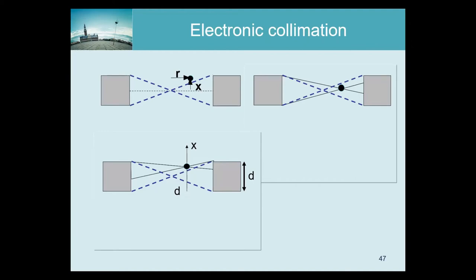Here is the same for a PET camera, but that is a bit more complicated. Suppose that these are two detectors of a PET camera — in real life they would be three-dimensional. We have an x-dimension going up, another dimension, and a y-dimension orthogonal to the slides. The drawing is very poor because the size of these crystals is typically four millimeters and the distance between the two systems is typically about 80 centimeters, but if drawn to scale you wouldn't see anything.